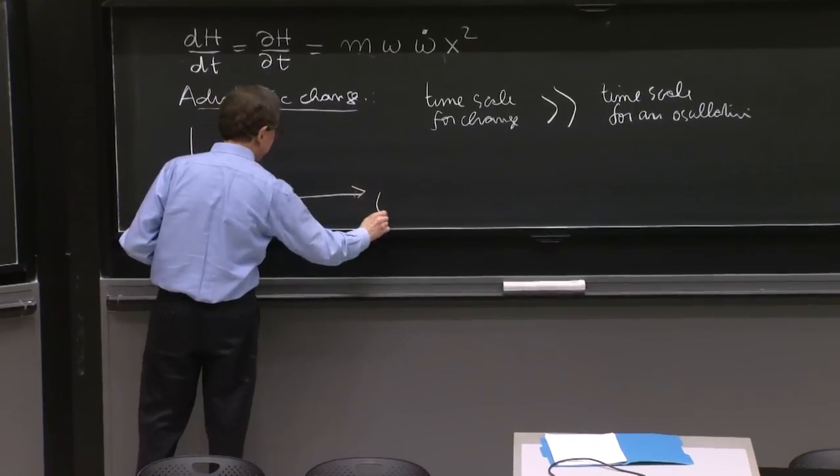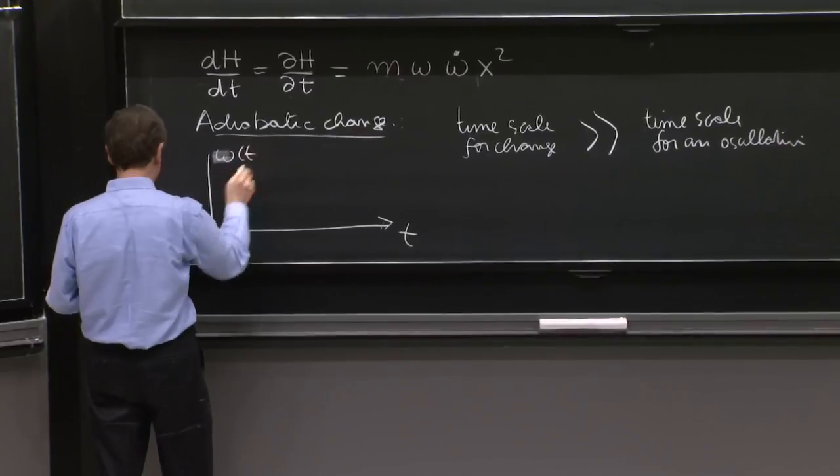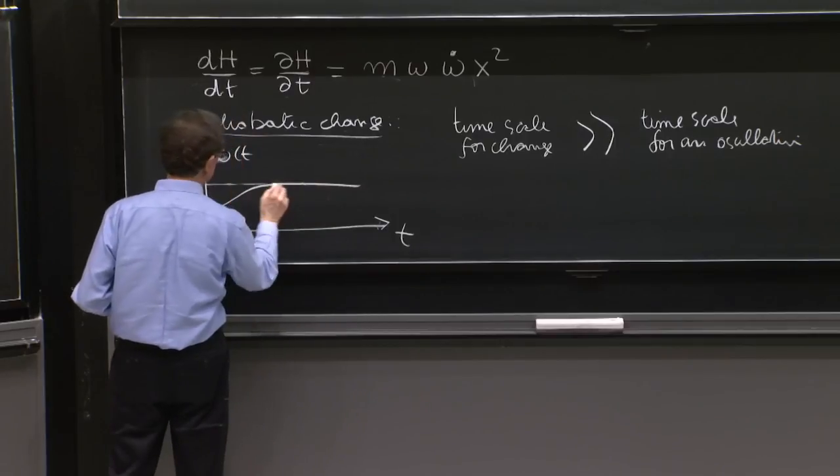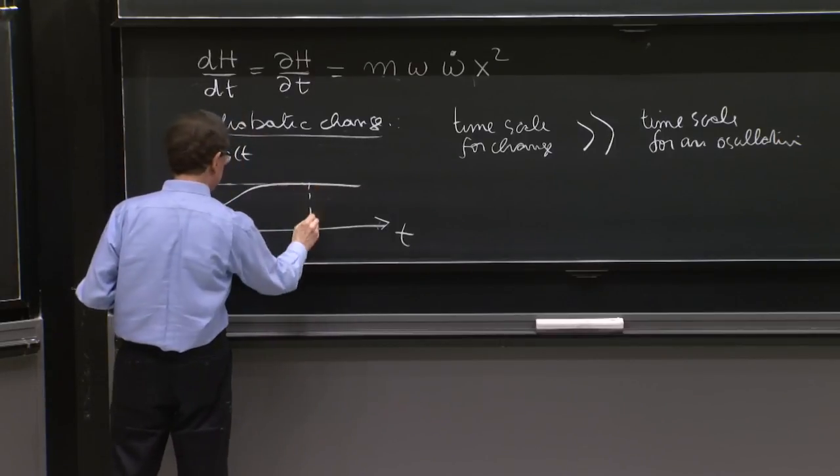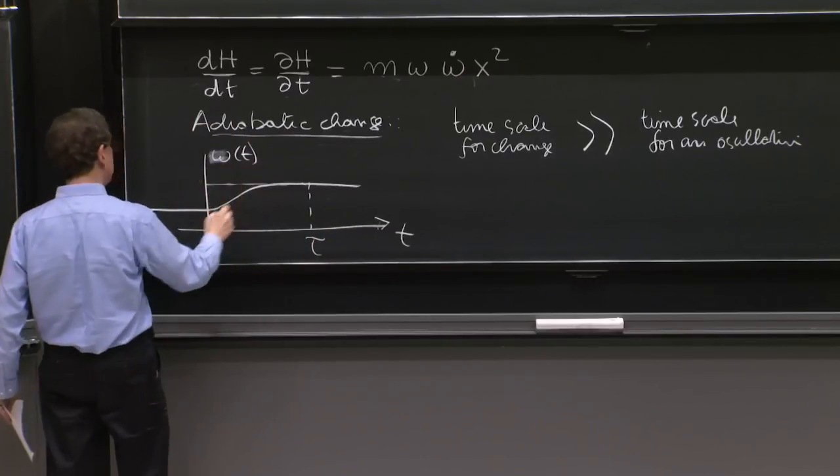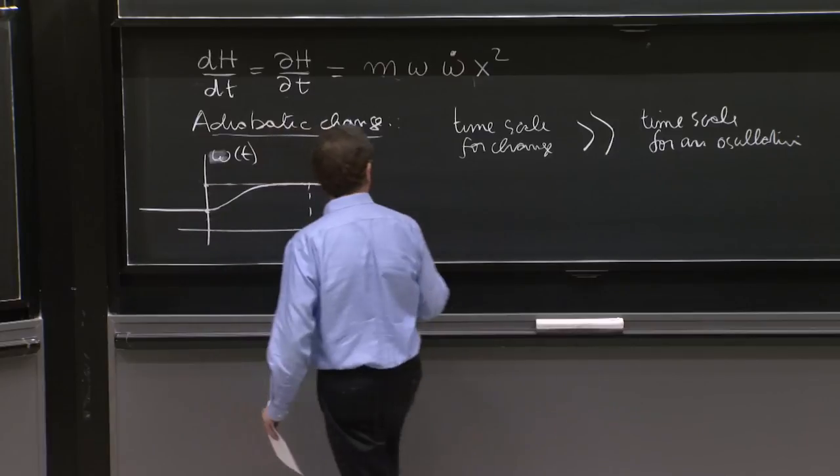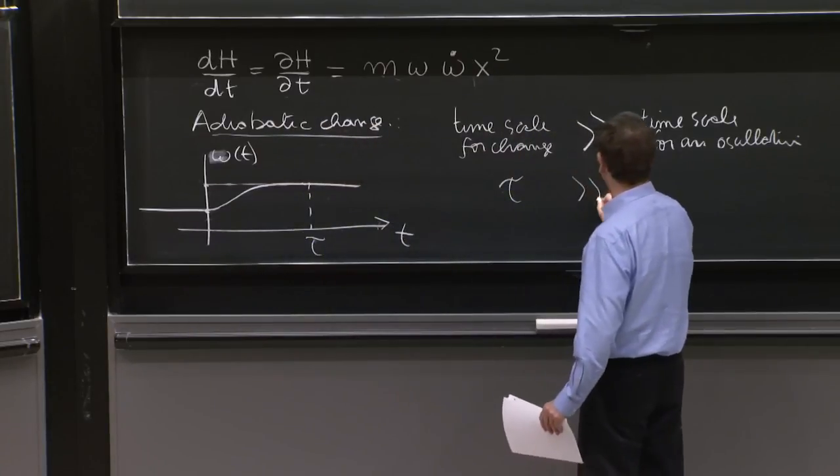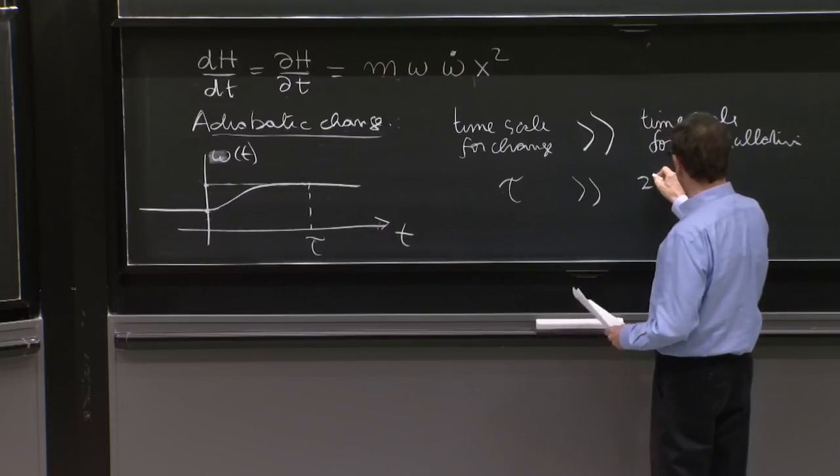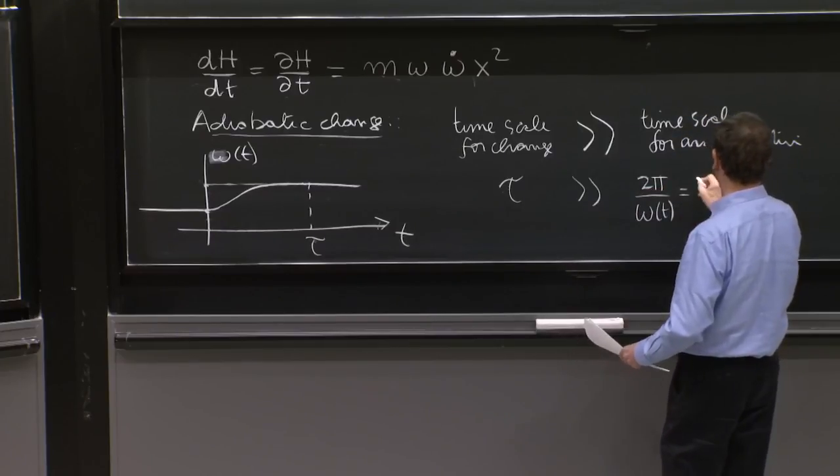So this is a little like we had in the WKB approximation. I'll make the point here. So here is, for example, a typical graph that one draws. Here is omega of t. And that's a constant. Then it changes a bit. And it stabilizes after a while in some time tau for a finite change in omega of t from some initial value to some later value. In this case, the time scale for change tau should be much bigger than the time period of oscillation, which is 2 pi over omega of t, which is the period.